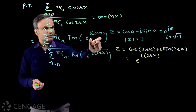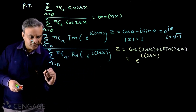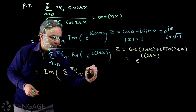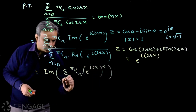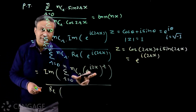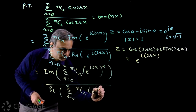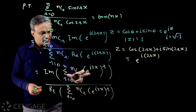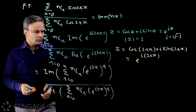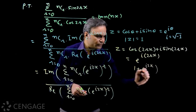We first find the imaginary part of the complex number, multiply it by nCr, then find the sum of the series for r = 0 to n. This is the same as the imaginary part of the series: sigma of nCr multiplied by e^(i·2x) to the power r, for r = 0 to n. Similarly, in the denominator we have the real part of this same sum. Here we have a binomial expansion — the standard general term — so the sum of this series is (1 + e^(i·2x))^n.